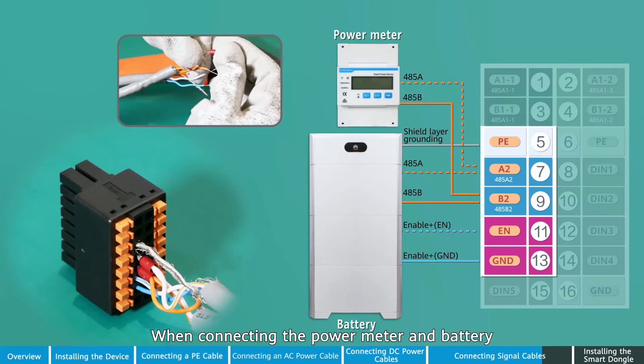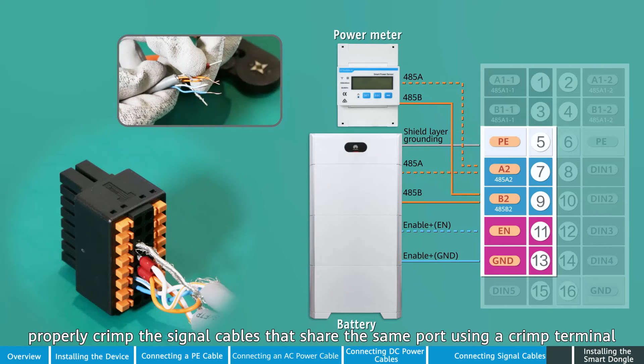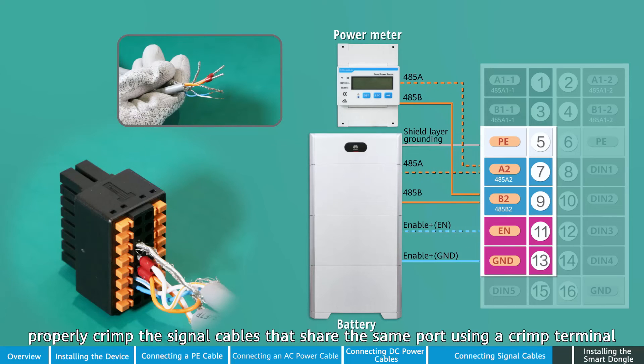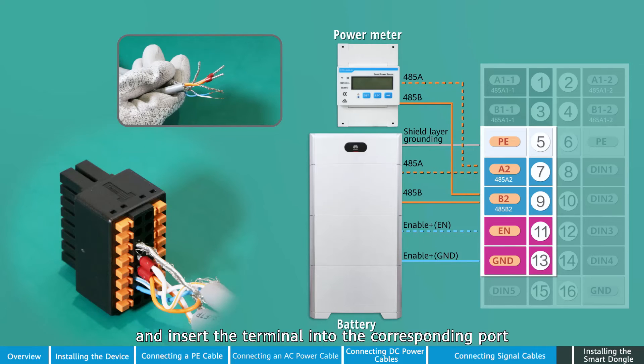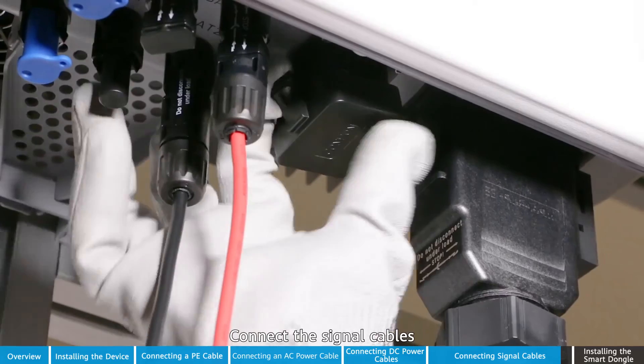When connecting the power meter and battery, properly crimp the signal cables that share the same port using a crimp terminal and insert the terminal into the corresponding port. Connect the signal cables.